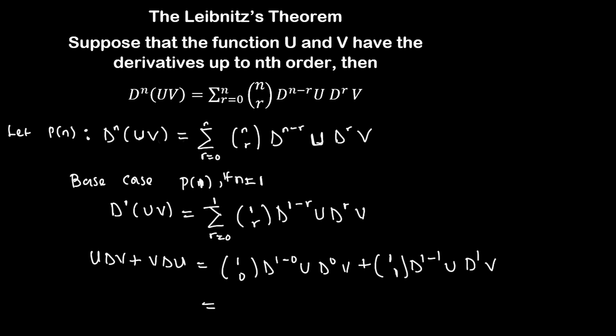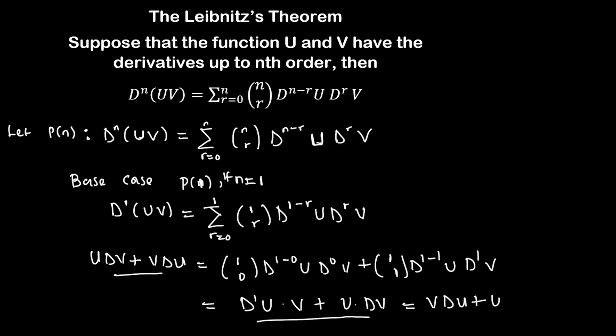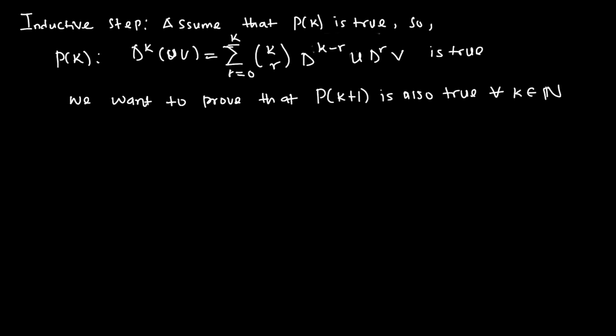Don't forget that C(1,1) is 1 and C(1,0) is also 1. So we have d^1(u) times d^0(v), and since d^0(v) means we are not differentiating v we just have v, plus C(1,1) which is 1 times d^0(u) which gives us u, times dv. You can see that the left-hand side equals the right-hand side since we can write this as v·du + u·dv. Hence P(1) is true.